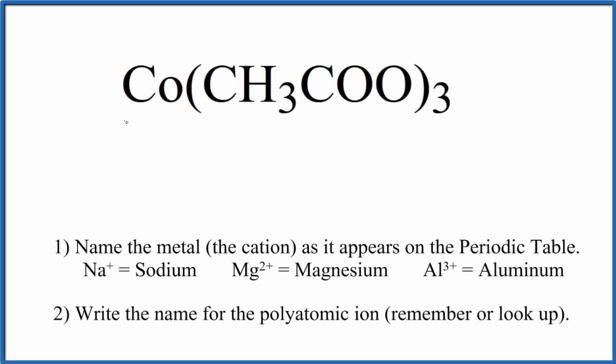In this video, we'll write the name for Co(CH3COO)3. So first off, you need to recognize that cobalt here, this is a transition metal, and then this whole thing, CH3COO, this is a polyatomic ion. It's called the acetate ion.